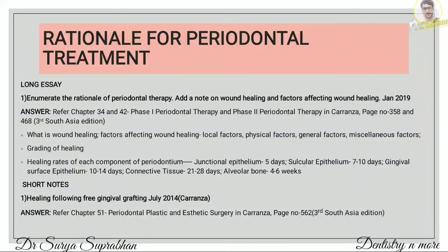For the healing rates: how many days the junctional epithelium, circular epithelium, connective tissue, and alveolar bone take for healing. For grading of healing, it is given in the form of stars: 1 star is control of inflammation, 2 stars is presence of long junctional epithelium, 3 stars is new attachment, 4 stars is partial regeneration, and 5 stars is complete regeneration.